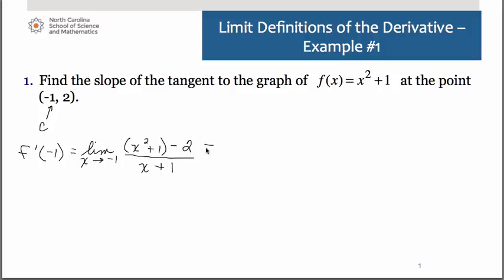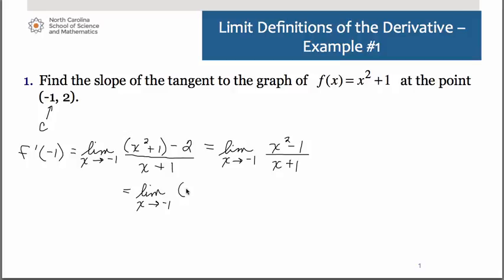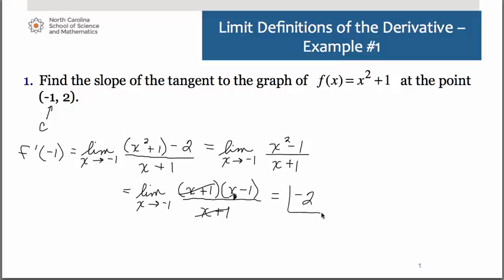Continuing from there, we just have a limit to evaluate. We're taking the limit as x approaches negative 1. When we simplify the numerator, we have x squared minus 1, which we can factor as a difference of two squares. The x plus 1 factors cancel out, and when we substitute negative 1 in for x, we get negative 2. So that would be the slope of that curve at the point negative 1, 2.